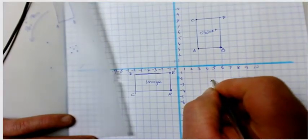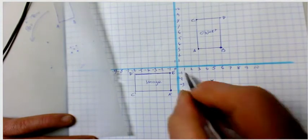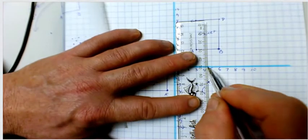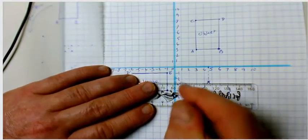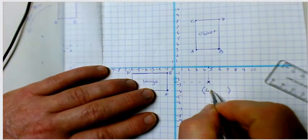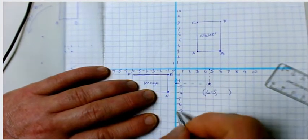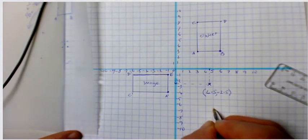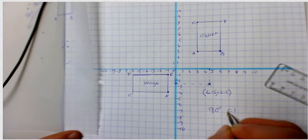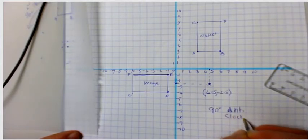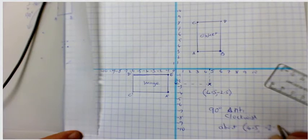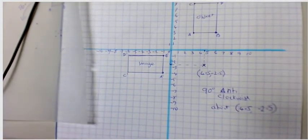The center of rotation is in the middle of that square. Looking at the coordinate: four and a half along the corridor and two and a half — but I've gone down the stairs, so it's negative 2.5. That's my center of rotation. In this case it is a 90 degree anti-clockwise rotation about the point (4.5, -2.5).